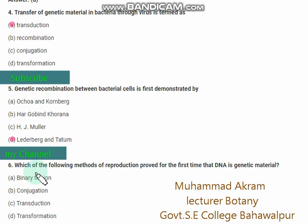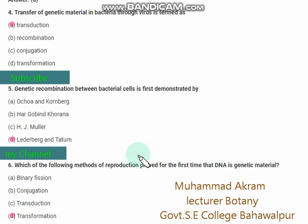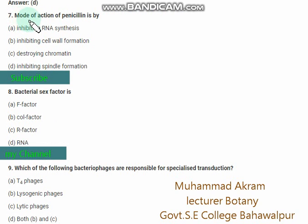Which of the following method of reproduction proved for the first time that DNA is a genetic material? The options are binary fission, conjugation, transduction, and transformation. Transformation is the method of reproduction that proved for the first time that DNA is genetic material. The mode of action of penicillin is by inhibiting cell wall formation — the right option is option B.